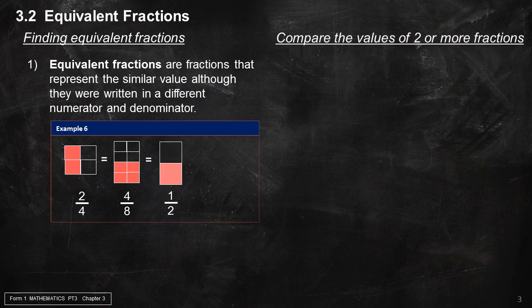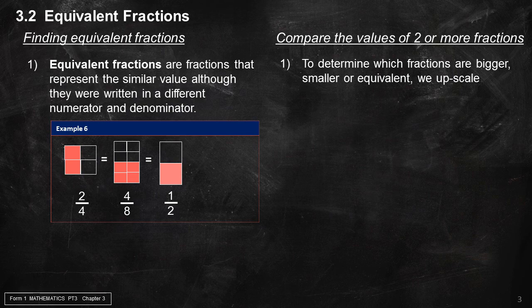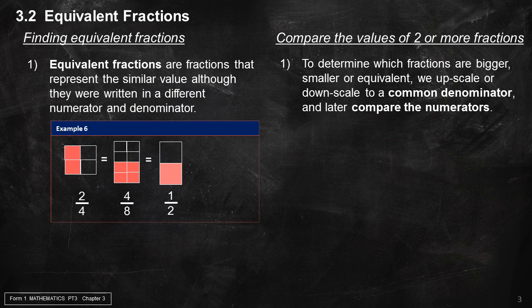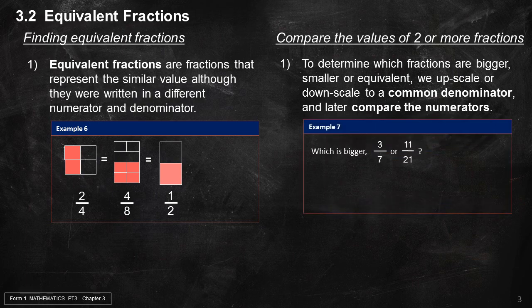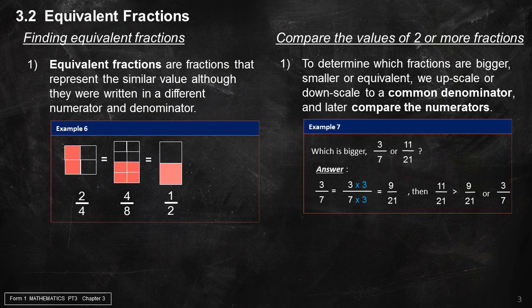Comparing the values of two or more fractions: To determine which fraction is bigger, smaller, or equivalent, we upscale or downscale to a common denominator and then compare the numerators. Example 7: Which is bigger — 3 over 7 or 11 over 21? Upscale 3 over 7 to 9 over 21. We find that 11 over 21 is bigger than 9 over 21, or 3 over 7.